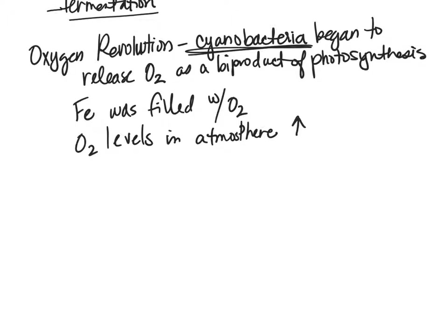This increase in oxygen first killed off lots of organisms because many of them were obligate anaerobes. Being an obligate anaerobe means they are obligated to go through anaerobic respiration and cannot be exposed to oxygen. When the oxygen levels increased, organisms exposed to oxygen died off. Those that could handle oxygen stuck around, and then we had evolution that built up to humans and other microorganisms.